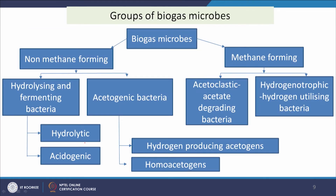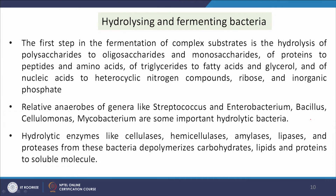There are different groups of microbes involved in anaerobic digestion. Non-methane-forming microbes include hydrolytic and fermenting bacteria and acetogenic bacteria. Among methane-forming microbes, there are two types: acetoclastic methanogens (acetate-degrading) and hydrogenotrophic methanogens (hydrogen-utilizing). These are the main groups of microorganisms or bacteria used in anaerobic digestion.